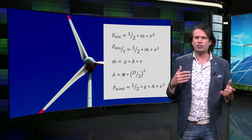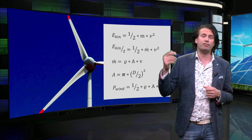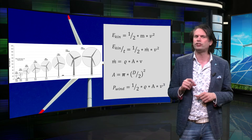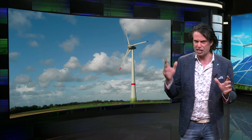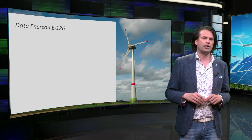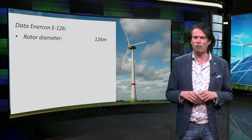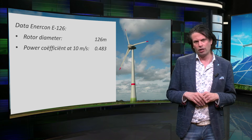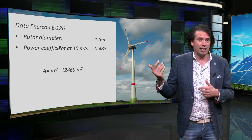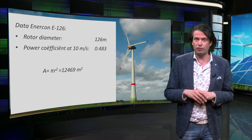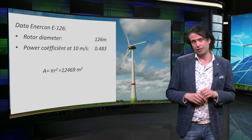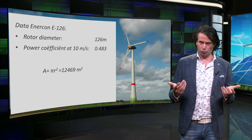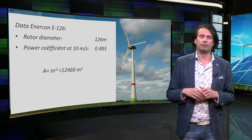There is a great variety of wind turbines nowadays. The height of towers can go up to 150 meters, while the rotor diameter can be as large as 150 meters. Let's use the equations for a typical wind turbine — the Enercon E126. It has a rotor diameter of 126 meters and a power coefficient of 0.483 at a wind speed of 10 meters per second. The frontal surface area is π times (diameter/2)², which is around 12,469 square meters. The density of air is known, so the only thing missing is the wind speed, which is highly dependent on location. We will assume 10 meters per second as an average wind speed at the location where the Enercon turbine is placed.